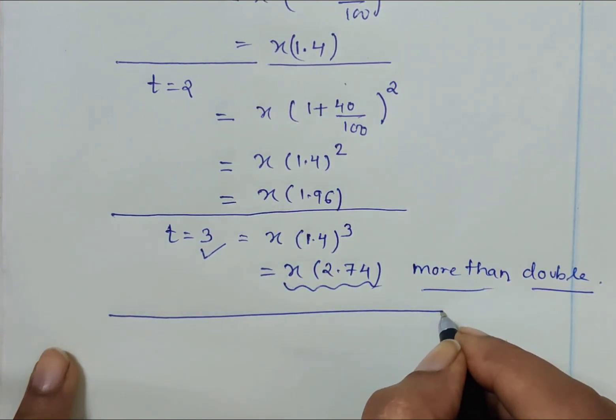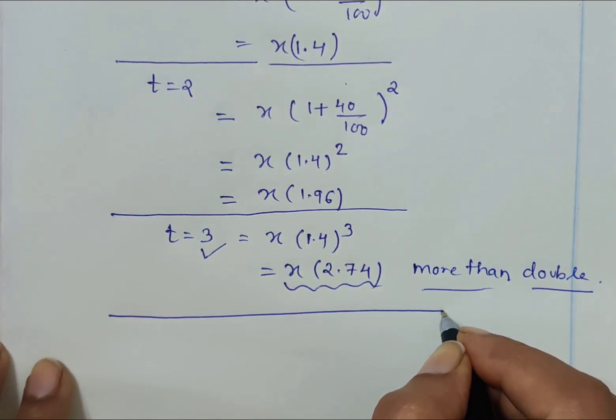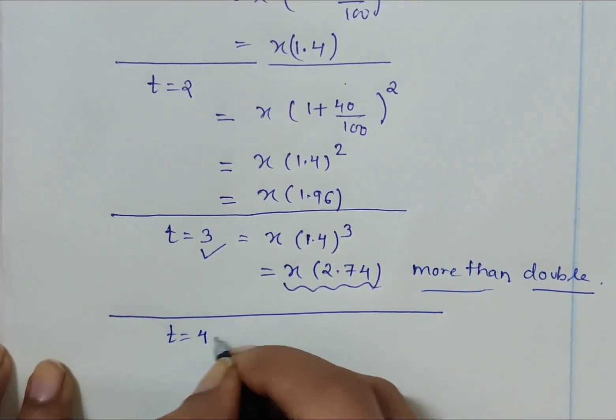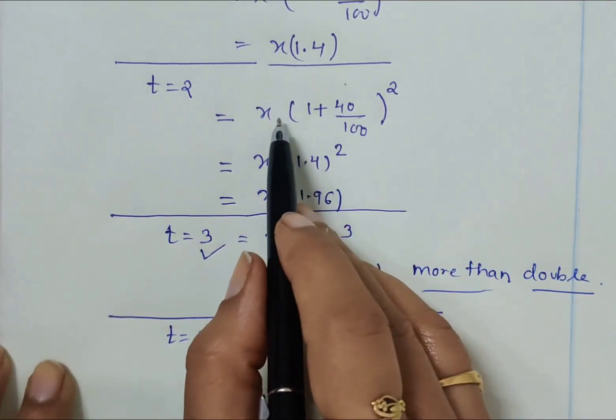But we have to calculate for the number of complete years which makes the sum of money put out at 40% annual compound interest to be more than tripled.